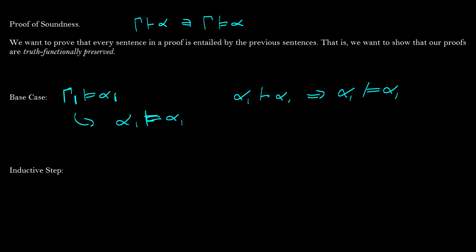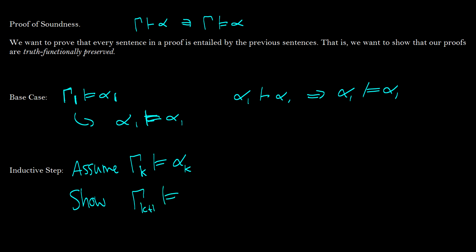Inductive step: we're going to assume that for any step in our proof, and every step before that step, the set of sentences gamma_k proves some sentence alpha_k. Then what we want to show is that gamma_{k+1} entails alpha_{k+1}. We're going to do that by syntactic proofs. There are 11 cases we have to consider — we have to do this for every rule.